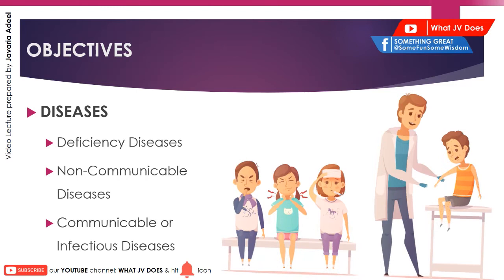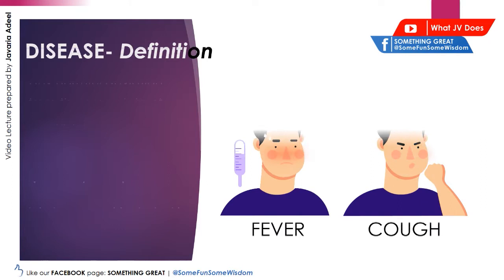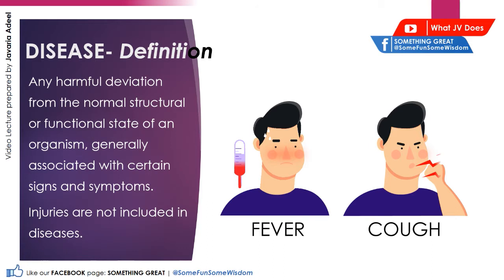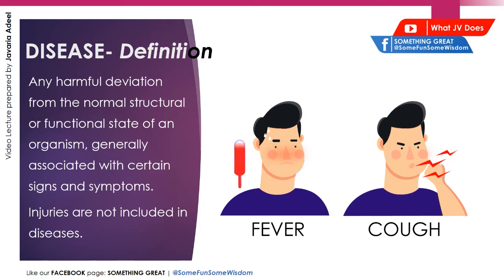Now let's move on towards the definition of disease — what exactly disease is. Any harmful deviation from the normal structural or functional state of an organism, generally associated with certain signs and symptoms, is known as disease. The injuries that are caused are not included in the category of diseases.